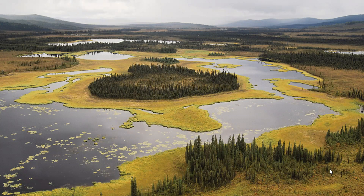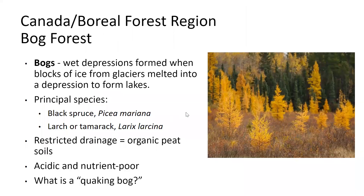This is an environment and landscape we don't have in North Carolina — soggy lakes ringed with trees. This is a bog forest. Bogs are wet depressions in the Northeast and Canada, formed when blocks of ice from glaciers melted into little depressions to make lakes. The primary species in these areas is black spruce and larch, or tamarack — Picea mariana and Larix laricina. As we learned in our gymnosperms lecture, larch is one of the few gymnosperms that is deciduous, producing beautiful yellow conical trees in fall.